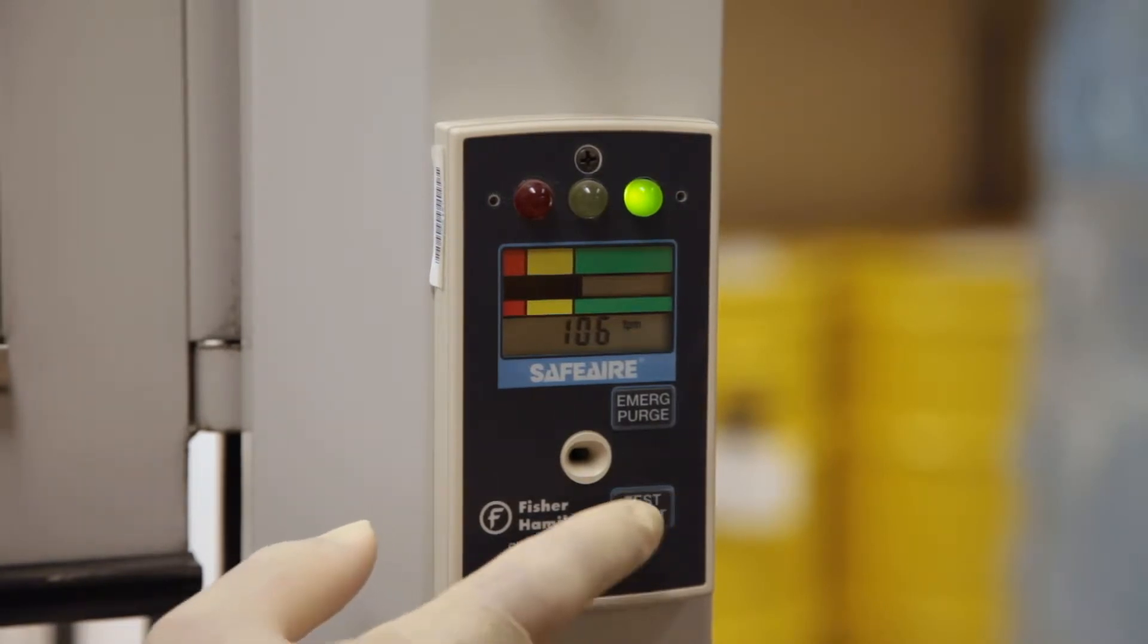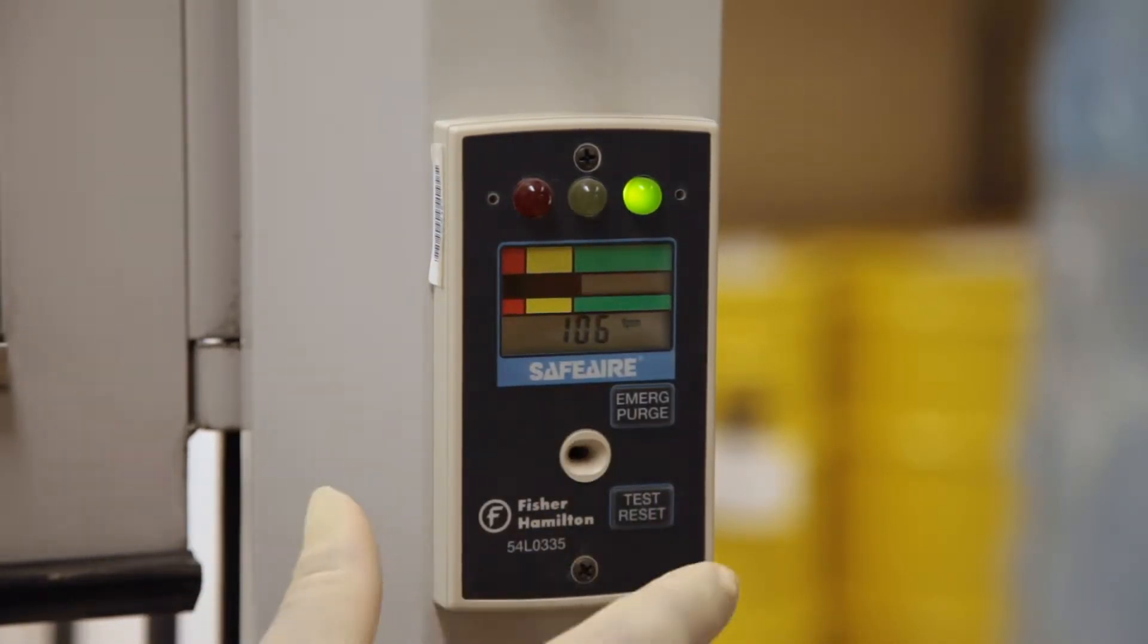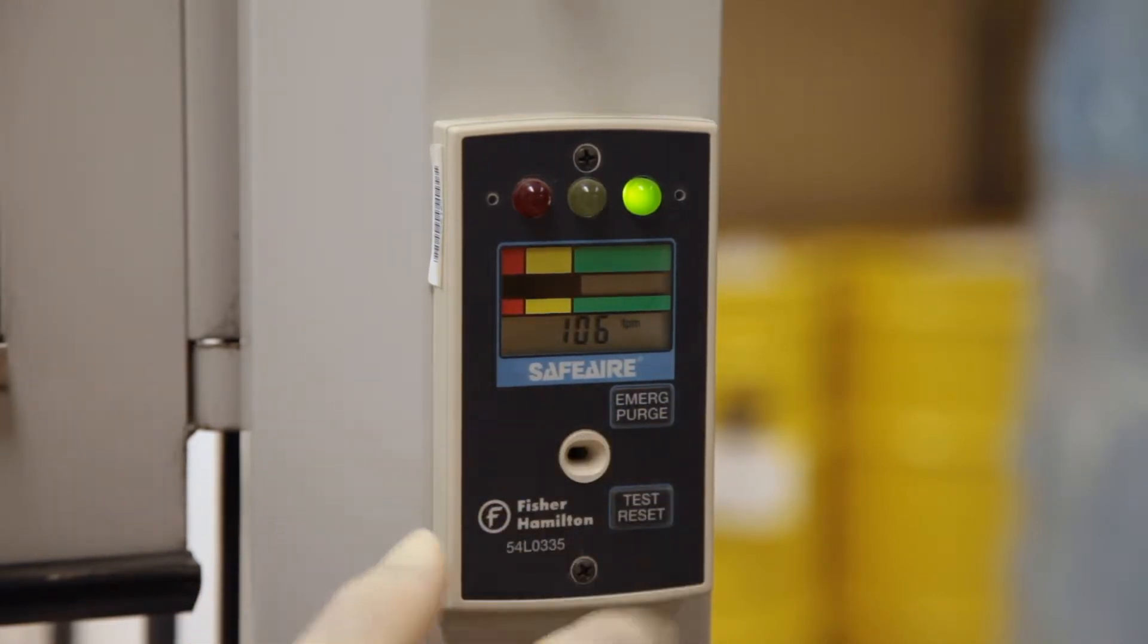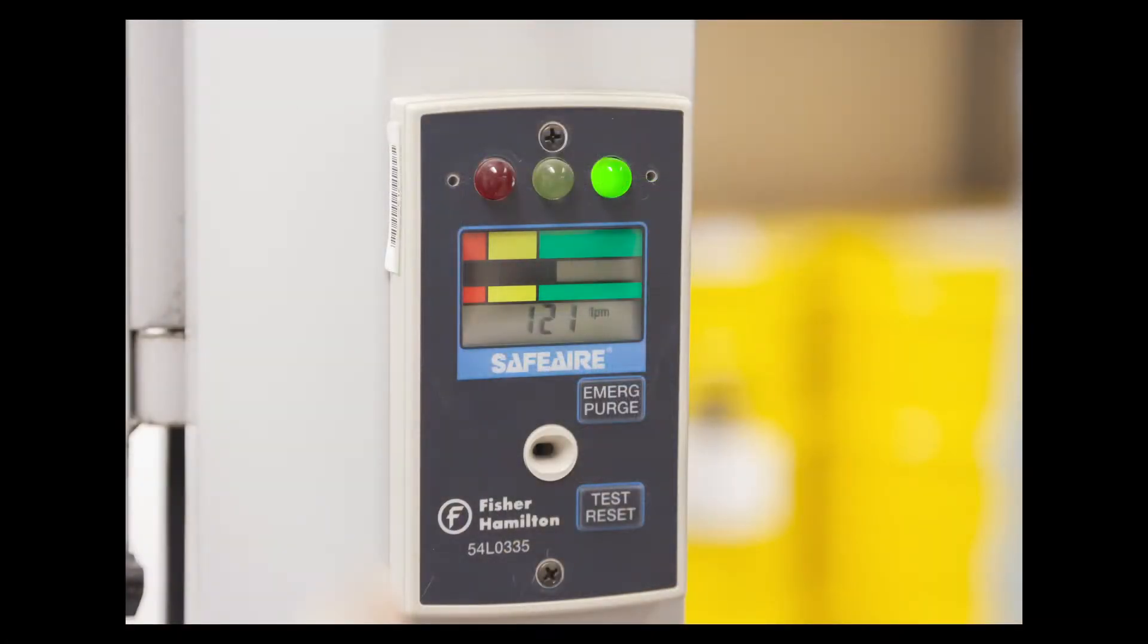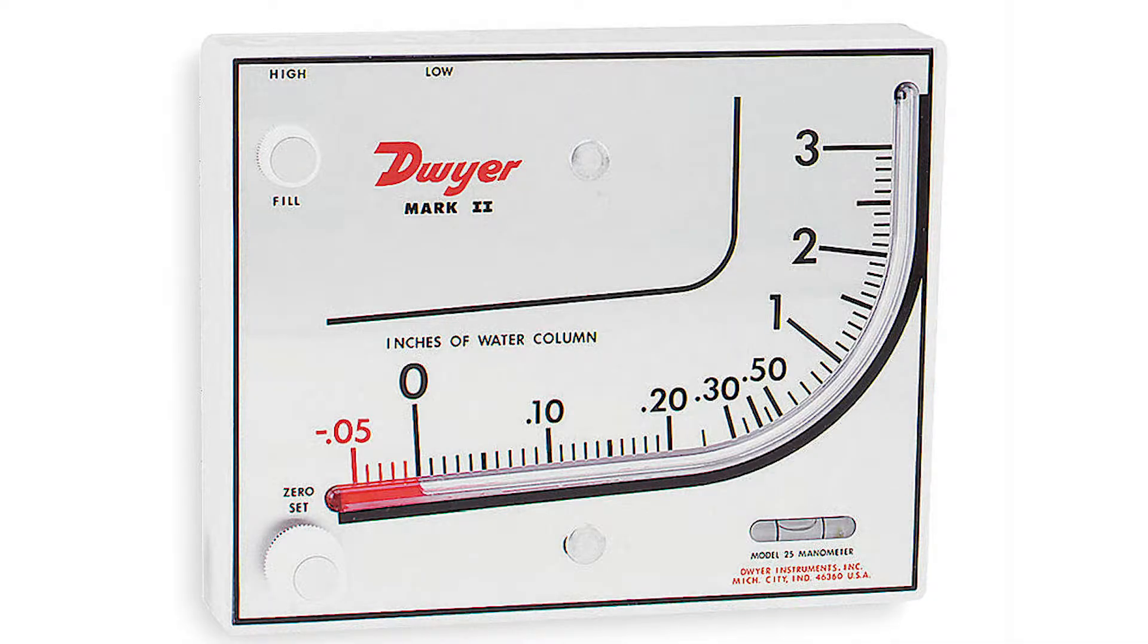All laboratory fume hoods at UCSF are required to have airflow monitors which indicate whether or not the fume hood is operational before use. There are several types of airflow monitors including digital airflow display, magna helic differential pressure gauge, and incline manometer.